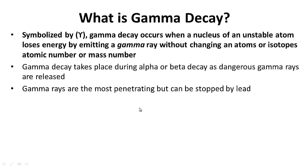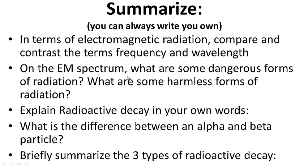For your notes, what is gamma decay? Question on the left-hand side, answer on the right-hand side. Go ahead and pause while you write. Now summarize: in terms of electromagnetic radiation, compare and contrast frequency and wavelength. On the EM spectrum, what are some dangerous forms of radiation? What are some harmless forms? Explain radioactive decay in your own words. What is the difference between an alpha particle and a beta particle? And briefly summarize the three types of radioactive decay.